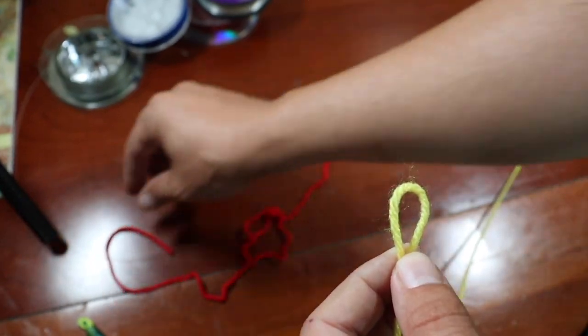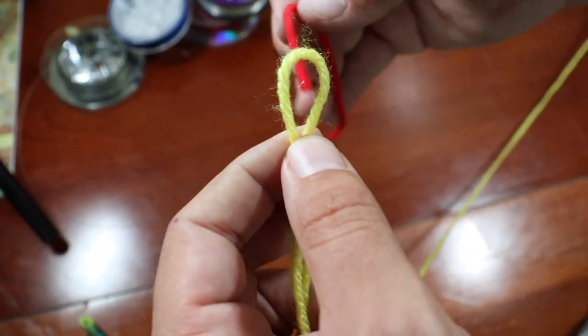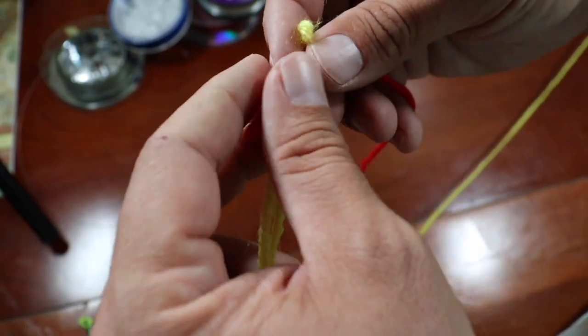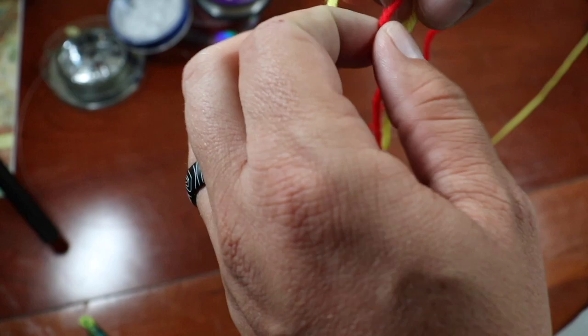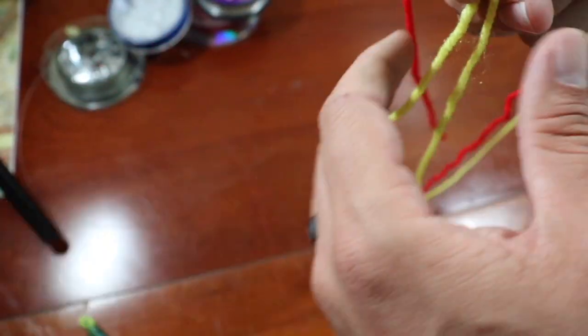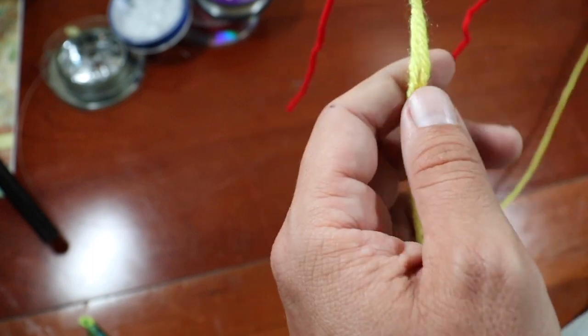Then you're going to get your braided line, and you're going to go through that loop like so, and you're going to want to pull it through that loop probably about six to eight inches.